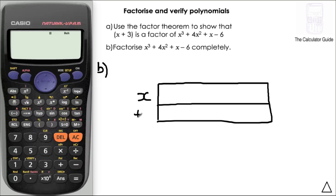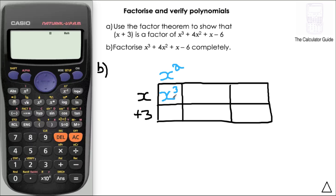I've got two rows in this grid to represent the two terms in the factor: x and plus 3. I'm going to introduce columns — as many as the highest degree of x in my polynomial, which is x cubed, so three columns. The quotient will appear on the top, similar to the top of the divisor in long division. The first term of my polynomial is x cubed, so I'm thinking about what I need to multiply x by to get x cubed — well, it's x squared.